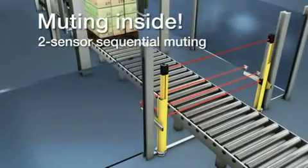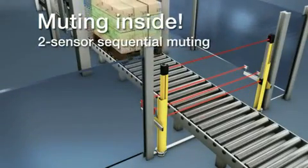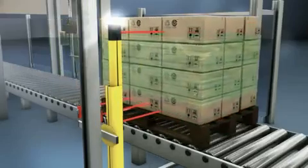Two-sensor sequential muting can also be configured for shipments leaving the danger zone, especially when the space is tight.